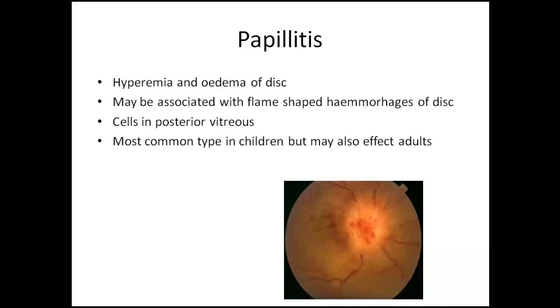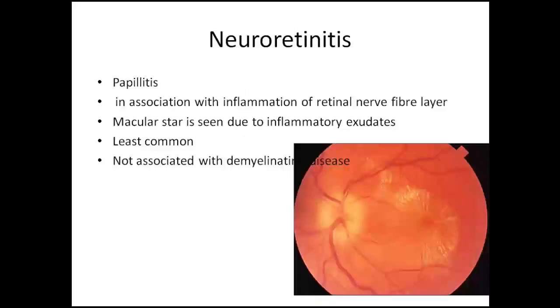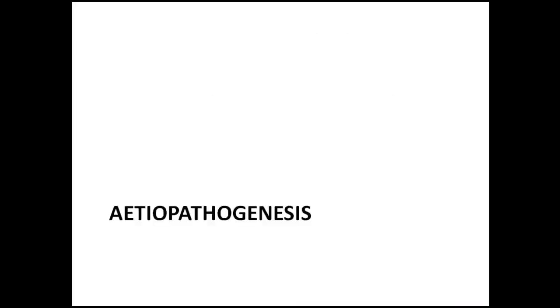In neuroretinitis, there is inflammation in the disc as well as inflammation seen in the macula. What you see is inflammation on the disc as well as on the retina, with star-shaped infiltrates or exudates in the retinal nerve fibers. It is the least common type and is usually not associated with demyelinating disease.